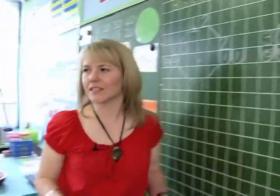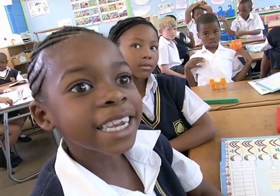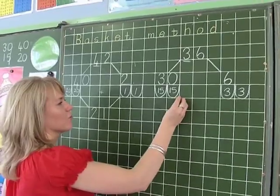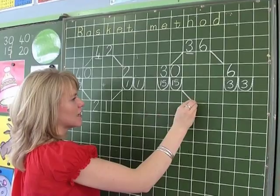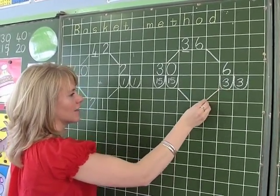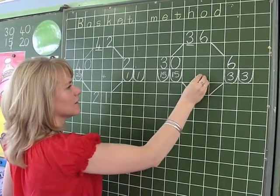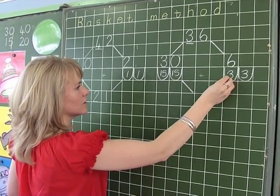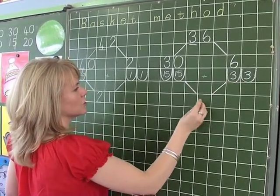What is my next step going to be? The next step is that you have to add the numbers. We take one basket from each side and add them together. Fifteen plus three gives you...